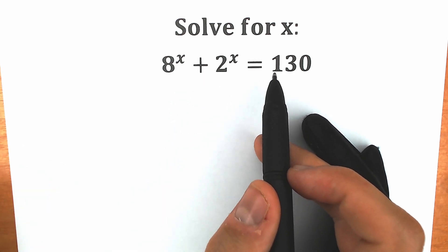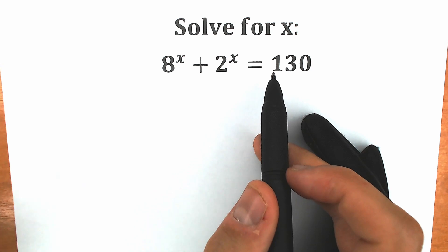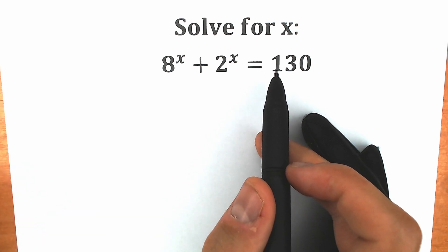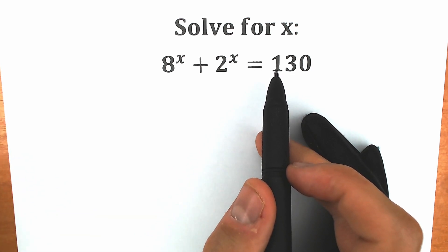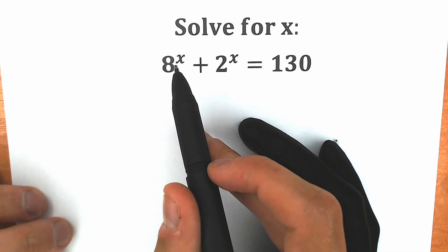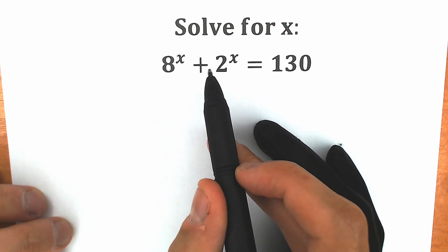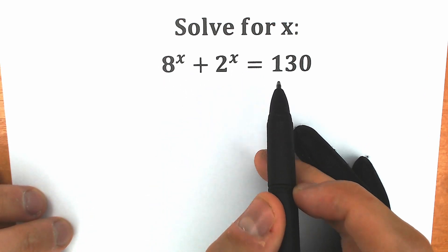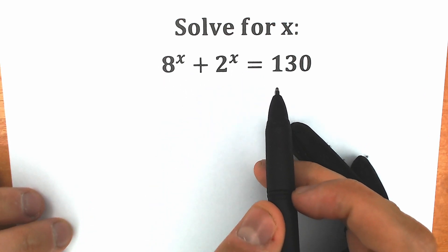Right now you can pause the video, or you can solve this challenge with me right now, and we will check our answers here in just a few minutes. So first of all, what do we have right here? We have 8 to the x plus 2 to the x equal to 130.